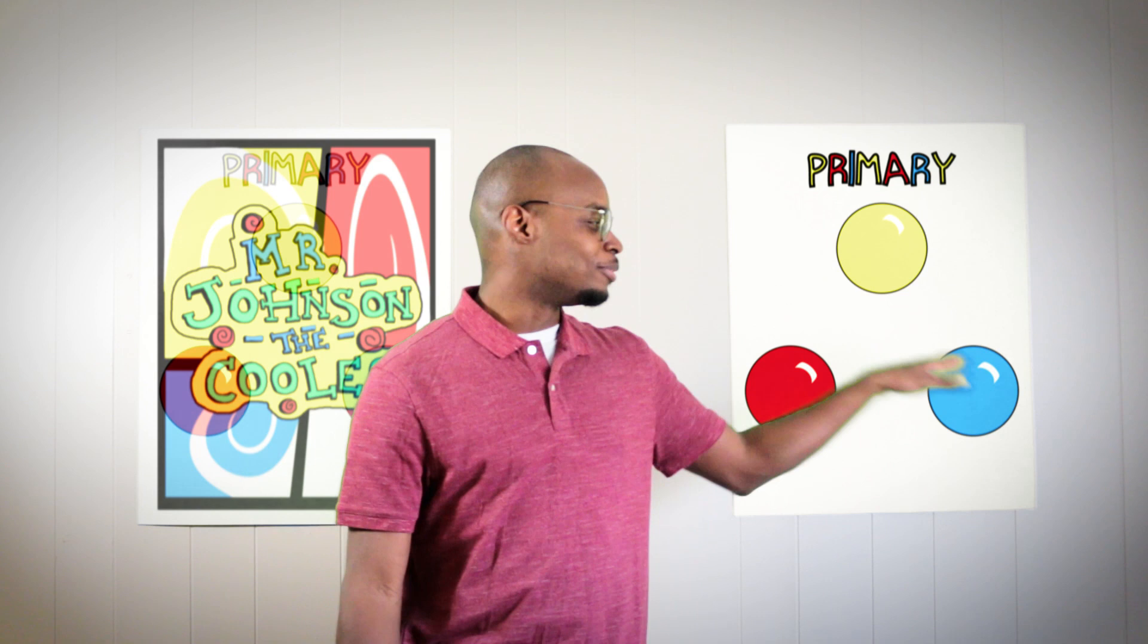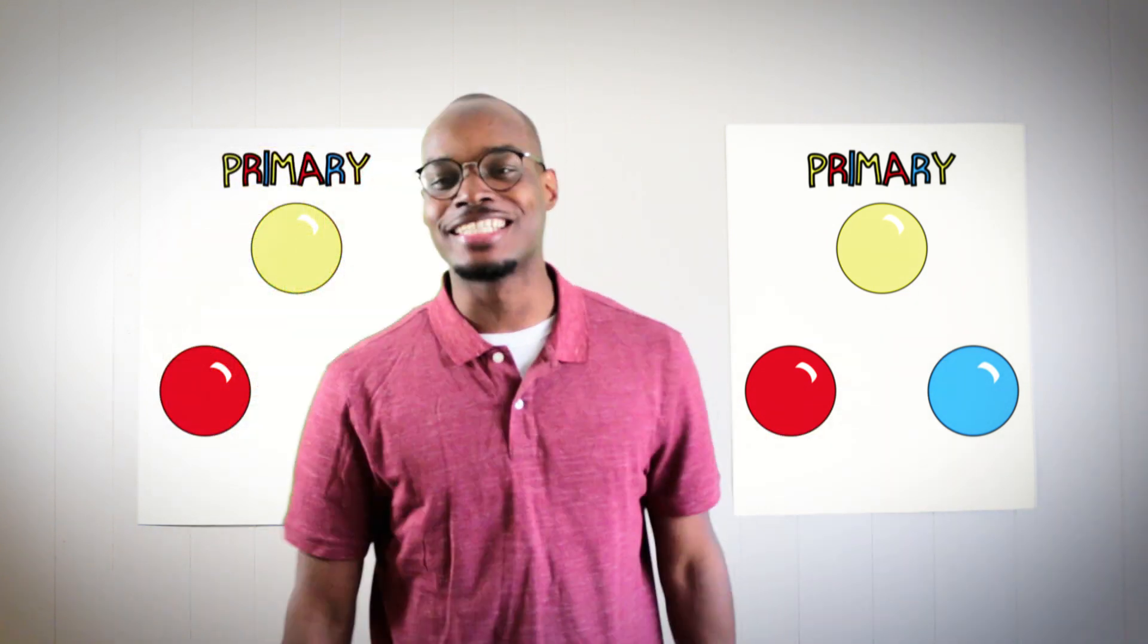Red, yellow, and blue. So when you mix two primary colors together you get the secondary colors. If I have my red over here and I got my yellow over there, I mix them together I get orange.